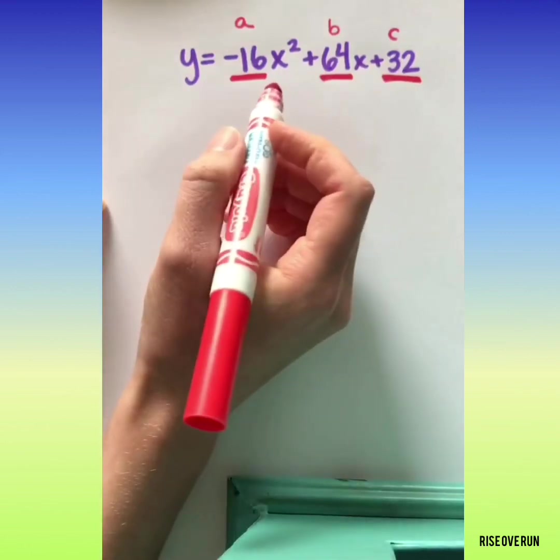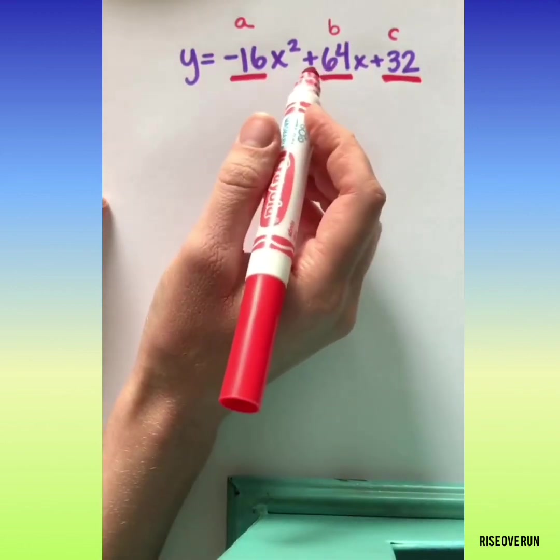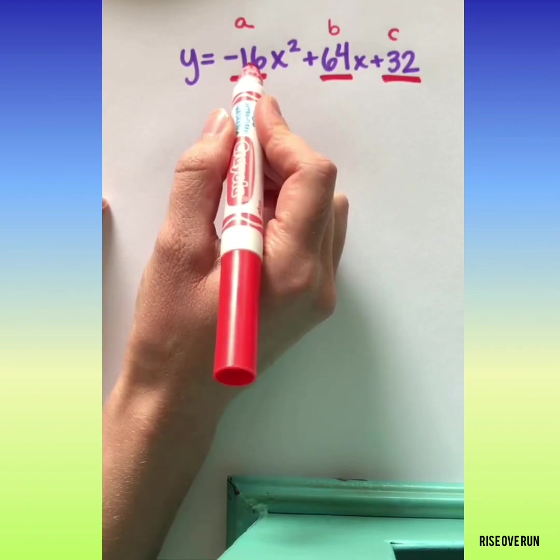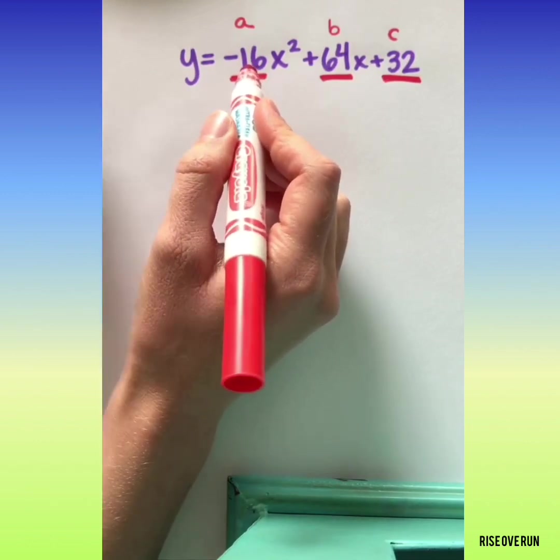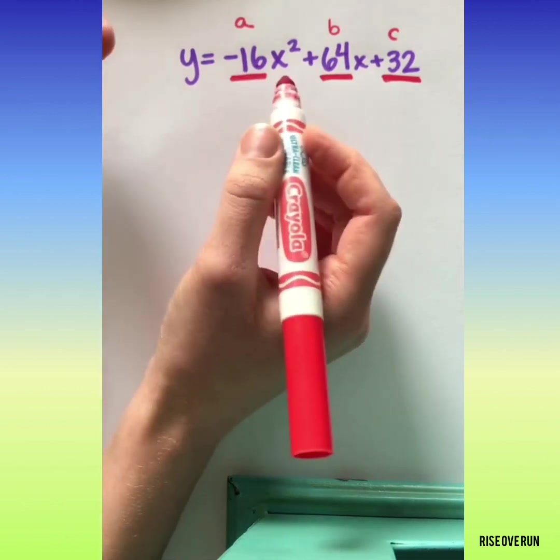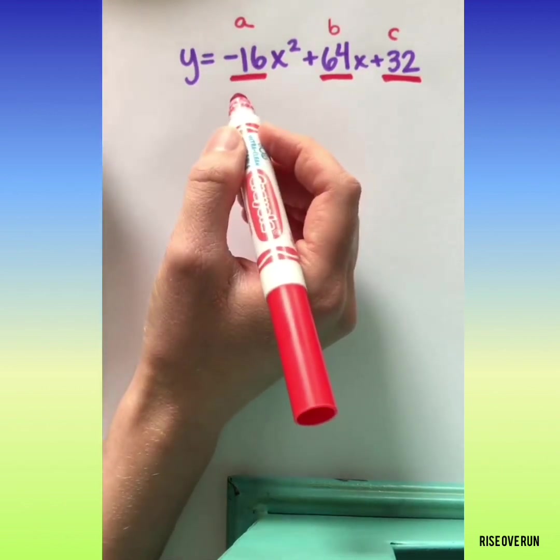If you're measuring something in feet per second, you're often going to see a negative 16 up here. This first number here is a representation of gravity's pull on the object. You don't really need to know that, but that's why we often see a negative 16.